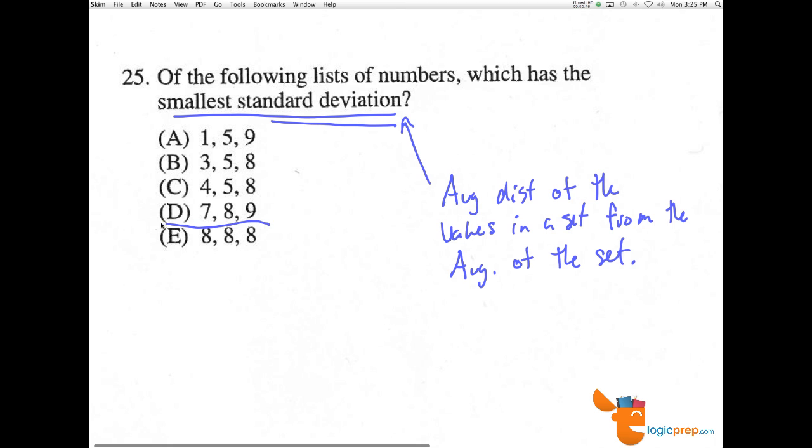E is the answer because every number is the same. So the standard deviation would be zero. The average is eight, and every number is eight. So there's zero distance away from eight.